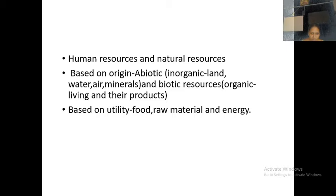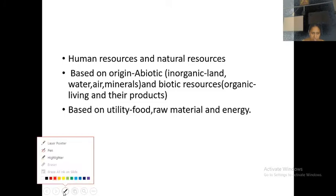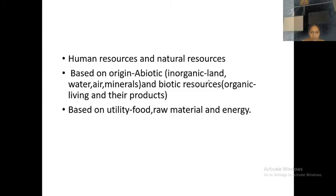Now we are moving to biotic resources. Biotic resources are also called organic living molecules and their products. Organic molecules means they are living. What are examples? Forest products, crops, birds, animals, fishes and other marine organisms. So you understand what is classification based upon their origin — you can classify it into abiotic and biotic.